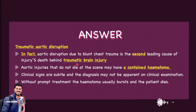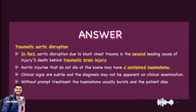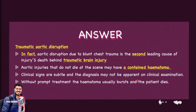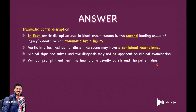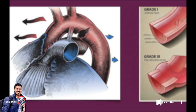Traumatic aortic disruption due to blunt chest trauma is the second leading cause of non-neurological death behind traumatic brain injury. Patients who don't die at the scene may have a contained hematoma. Clinical signs are subtle and the diagnosis may not be apparent on clinical examination. Without prompt treatment, the hematoma usually ruptures and the patient dies.